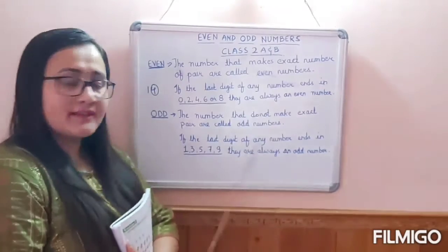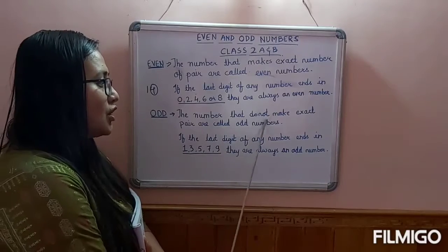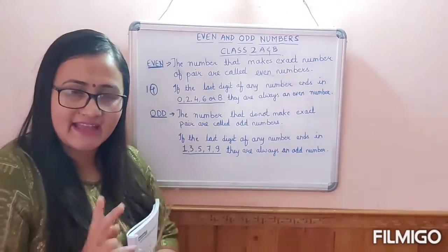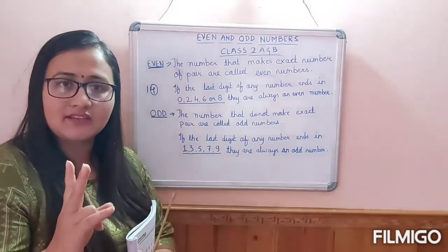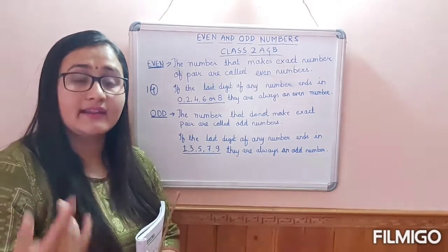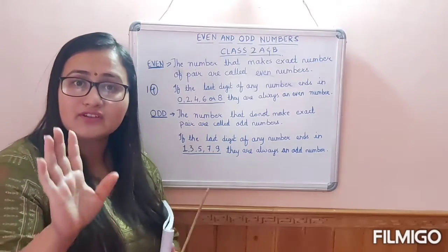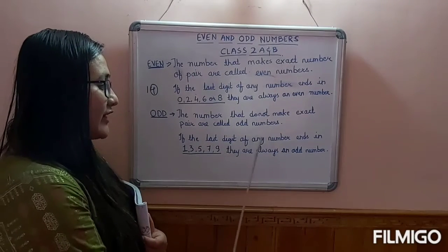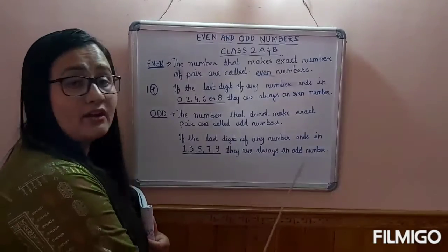So now the next topic is odd numbers. The numbers that do not make an exact pair are called odd numbers. Even numbers are those which make an exact pair, and odd numbers are those that do not make an exact pair. For example, 3 — it does not make any pair. If you have 3 chocolates and you give away 2 to your friend, you are left with only 1 chocolate, which does not have a pair. Numbers which do not have a pair are known as odd numbers. If the last digit of any number ends in 1, 3, 5, 7, or 9, it is always an odd number.